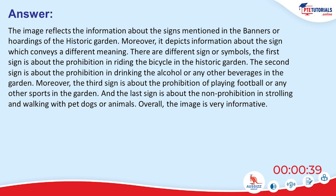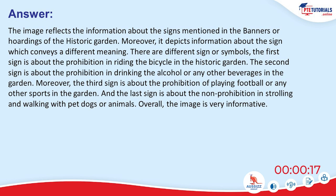The image reflects information about signs mentioned in banners or hoardings of a historic garden. There are different signs or symbols. The first sign is about the prohibition of riding a bicycle in the garden. The second sign is about the prohibition of drinking alcohol or any other beverages. The third sign is about the prohibition of playing football or any other sports. The last sign is about the non-prohibition of strolling and walking with pet dogs or animals.